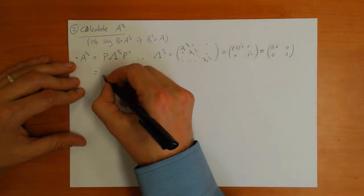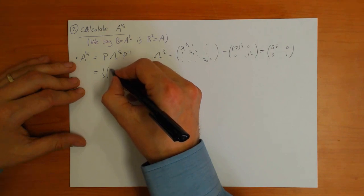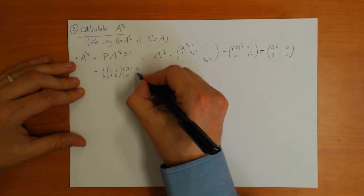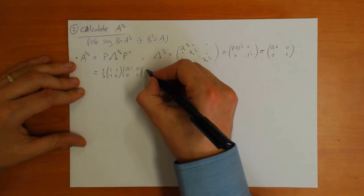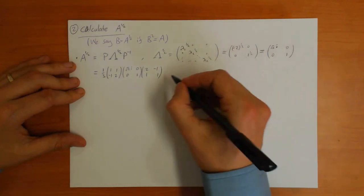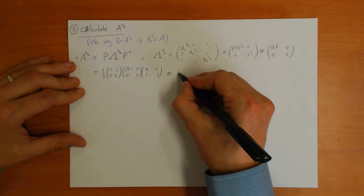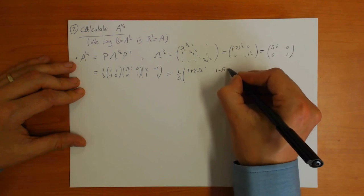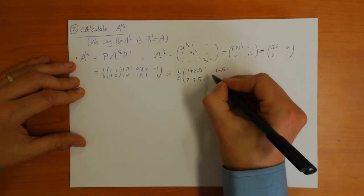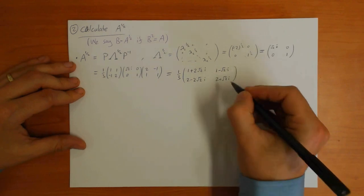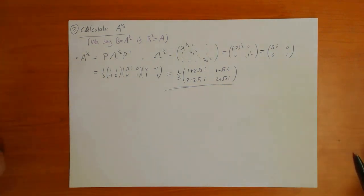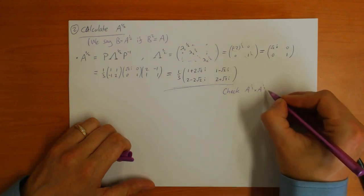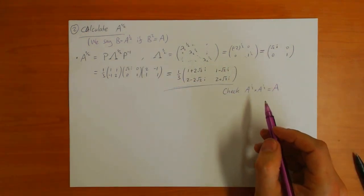I'll choose the square root which is square root of 2 times i in the top-left and just 1 in the bottom-right — that's one choice. So P is [1, 1; -1, 2], Lambda to the half is [sqrt(2)i, 0; 0, 1], and P-inverse is one-third [2, -1; 1, 1]. Multiplying those out, the answer is one-third times [1 + 2*sqrt(2)i, 1 - sqrt(2)i; 2 - 2*sqrt(2)i, 2 + sqrt(2)i]. You can verify that squaring this matrix gives back A.